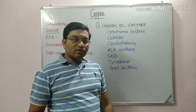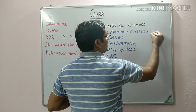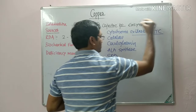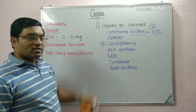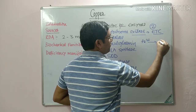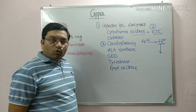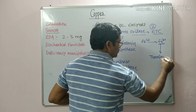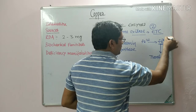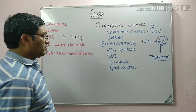The second important function of copper is its involvement in cellular respiration, that is, the electron transport chain. Third, ceruloplasmin helps in the conversion of ferrous to ferric iron. This ferric iron attaches with apotransferrin and is converted into transferrin. So ceruloplasmin helps in the incorporation of iron into transferrin.